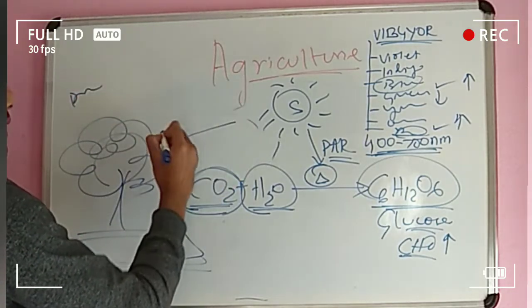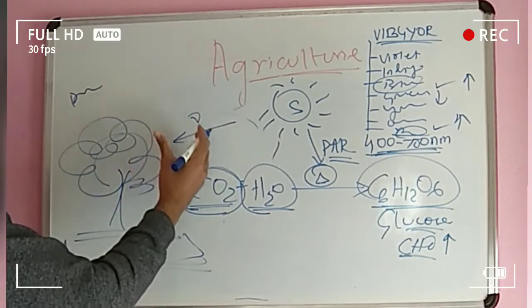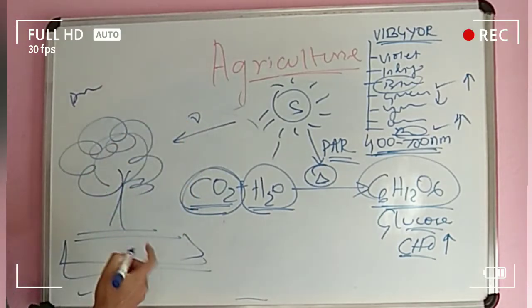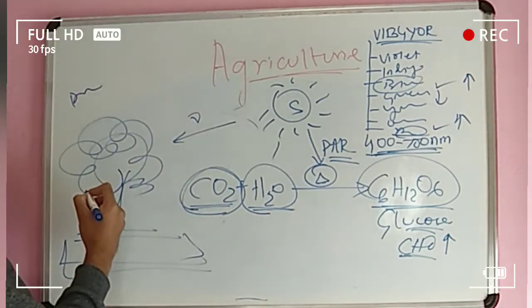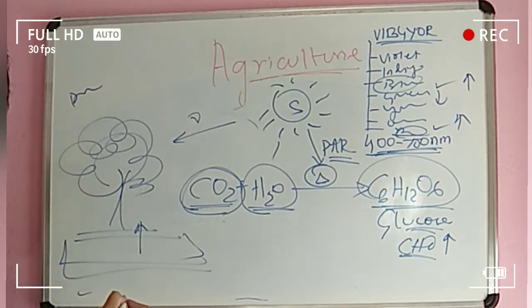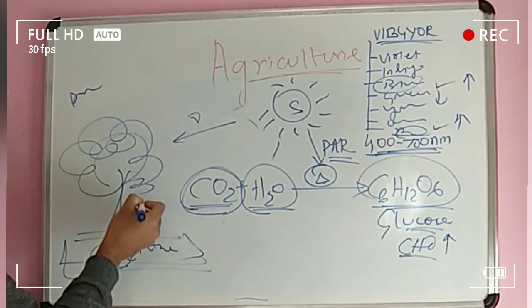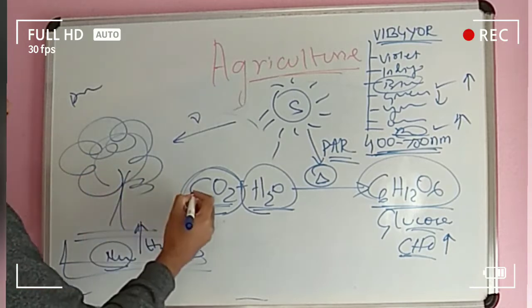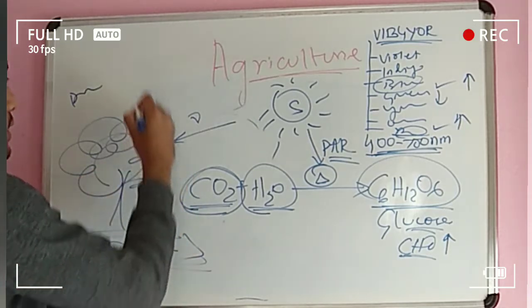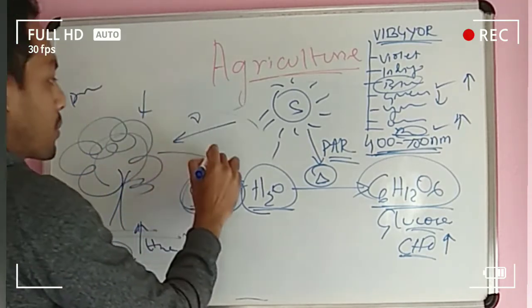Plants receive energy from sunlight — that photosynthetically active radiation. They receive water from soil, along with some nutrients. They get carbon dioxide from the atmosphere. Then this photosynthesis process happens inside the chlorophyll — which we will study later.